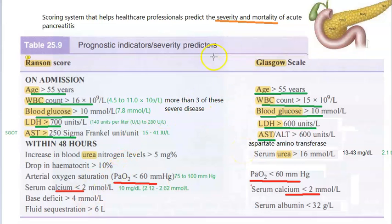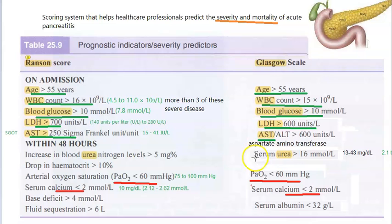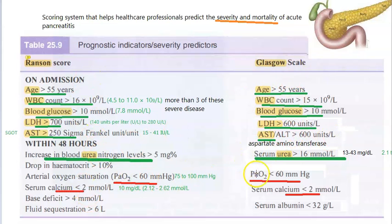Within 24 hours, they also check: partial pressure of oxygen (PaO2) — if it is low, the patient is not retaining oxygen; falling calcium values; and elevated serum urea levels, which suggests the kidney is not functioning well. PaO2 and calcium will be less, while other values will be more. If three or more criteria are present, it is a severe case.